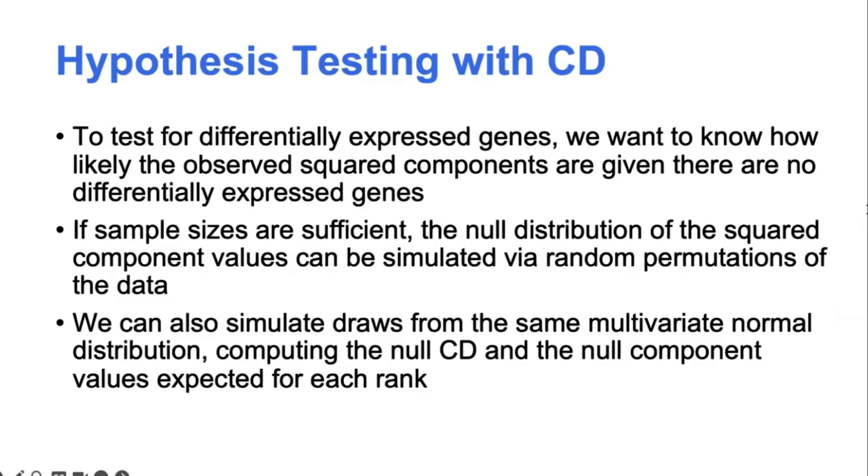So since we don't have much prior knowledge about what the null distribution of those component values might be, we can use permutation testing to try and simulate it. And if you remember from last week, permutation testing is just taking n random permutations of the data and then calculating the test statistic, or in this case, the vector components to estimate the null distribution.